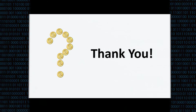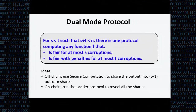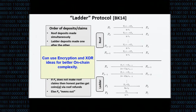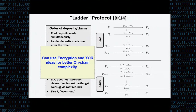Question: Could you quickly summarize the asymptotic improvement? I think it was from n² to n for the claim-or-refund? Yes — we go from n² to n. The script complexity — the size of all circuits summed over everything — used to be n² times some security parameter; we improve that to n times the security parameter. That now matches the other known protocol by the other group.